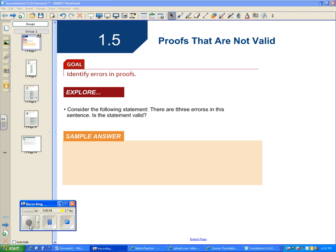1.5 Proofs That Are Not Valid. What we're trying to do is we're looking at proofs and saying, hey, there's a mistake. So here's a statement someone made: There are three errors in this sentence. Is this statement valid?